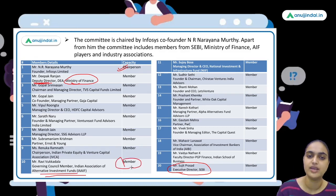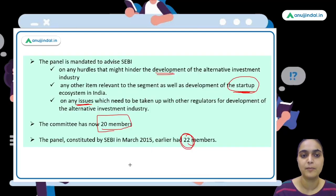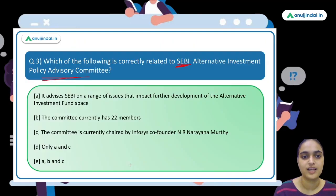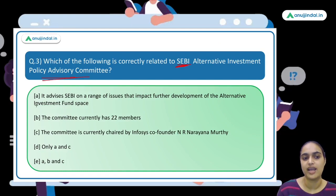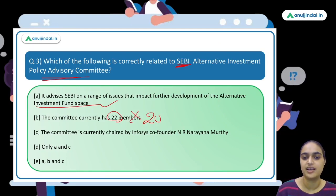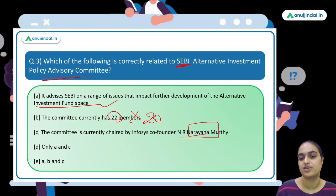Coming back to the question: the committee advises SEBI on matters related to AIF space — correct. It currently has 22 members — incorrect, it has 20 members. It is chaired by Mr. Narayana Murthy — correct. So statements A and C are correct, making the answer option D.